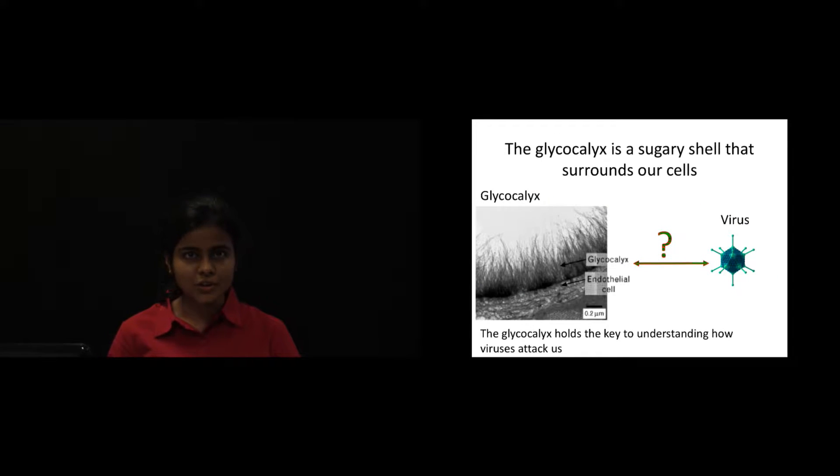Glyco means sugar and calyx means shell. So the glycocalyx is simply a sugar shell that surrounds our cells and keeps us safe from viral infections. It is a gatekeeper that decides what can enter the cell and what stays out.